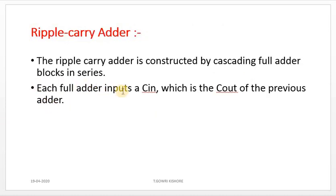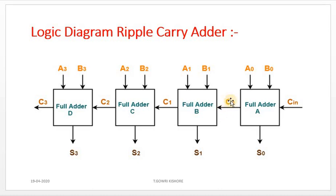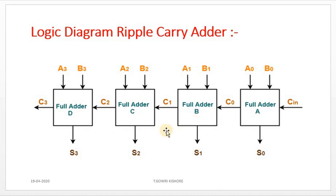Each full-adder takes a C-in which is the C-out of the previous adder. The C-out of full-adder A acts as the carry-in for full-adder B. For example, C-1 is taken as the input for full-adder C, and the same C-1 is the output of full-adder B. This is the logic diagram of the ripple-carry-adder.